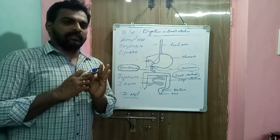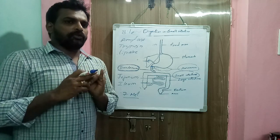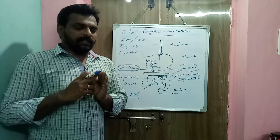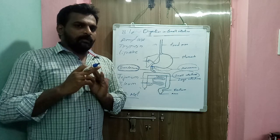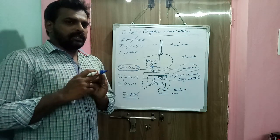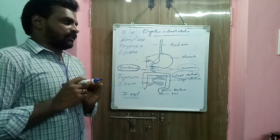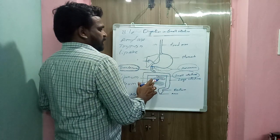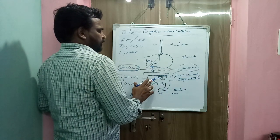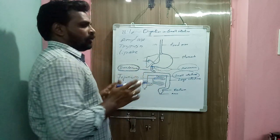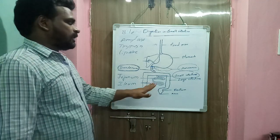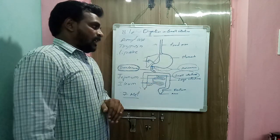Carbohydrates, proteins, and fats are complex food materials that are converted into glucose, amino acids, and fatty acids respectively. About 95% of all food materials are digested in the small intestine, so complete digestion takes place in the small intestine.